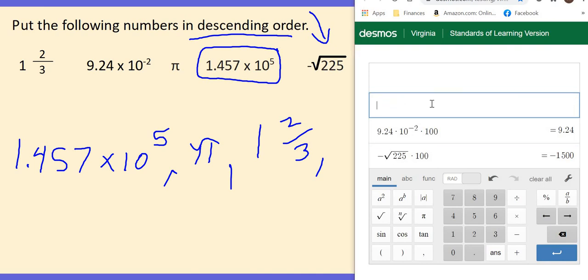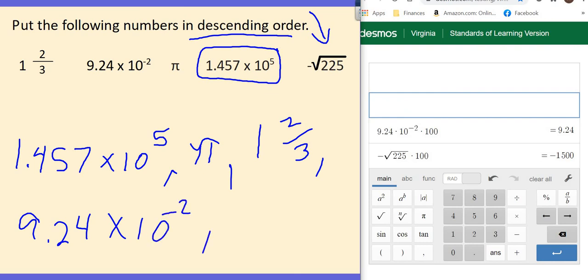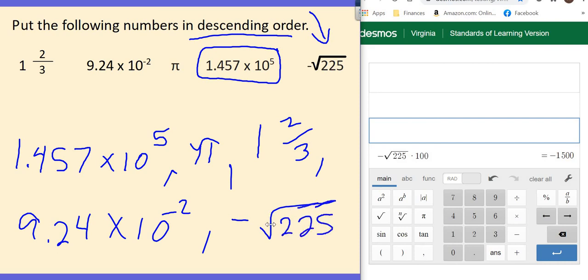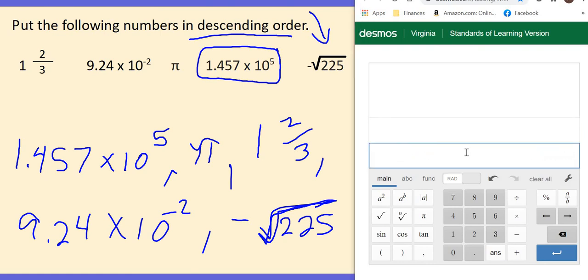Again, what is the biggest number left? So that is the 9.24 times 10 to the negative 2. I'm going to take that out of my calculator. And finally, the smallest number was the only negative we had. So you always got to remember, look for the negatives. And if you get a number like pi, you still have to multiply it by 100 to make it a percent.